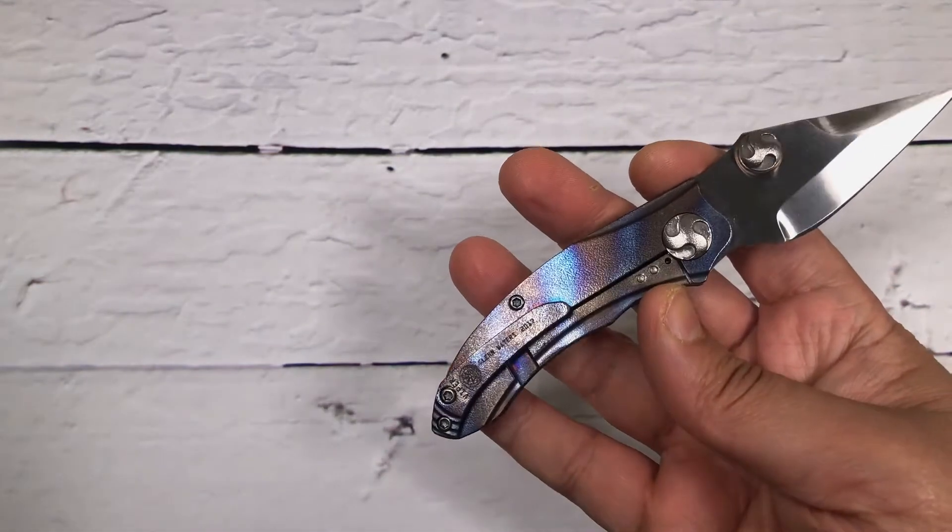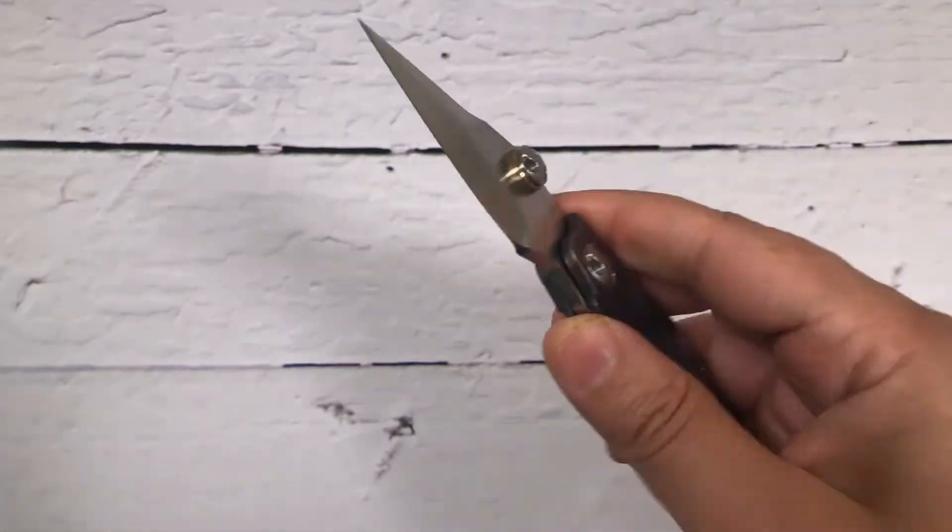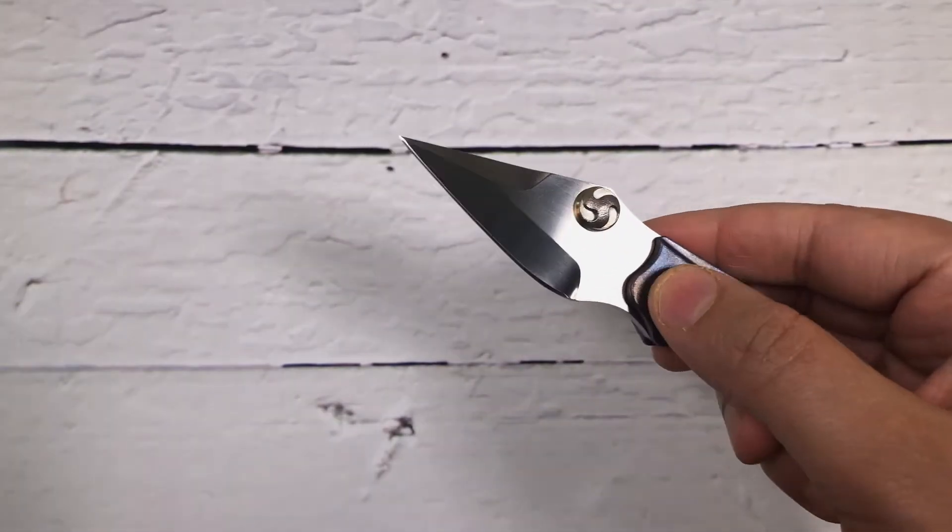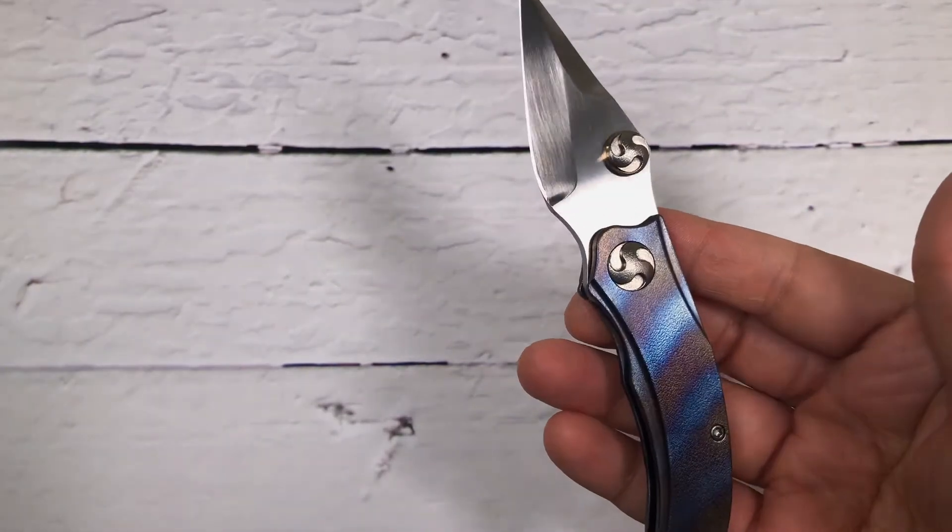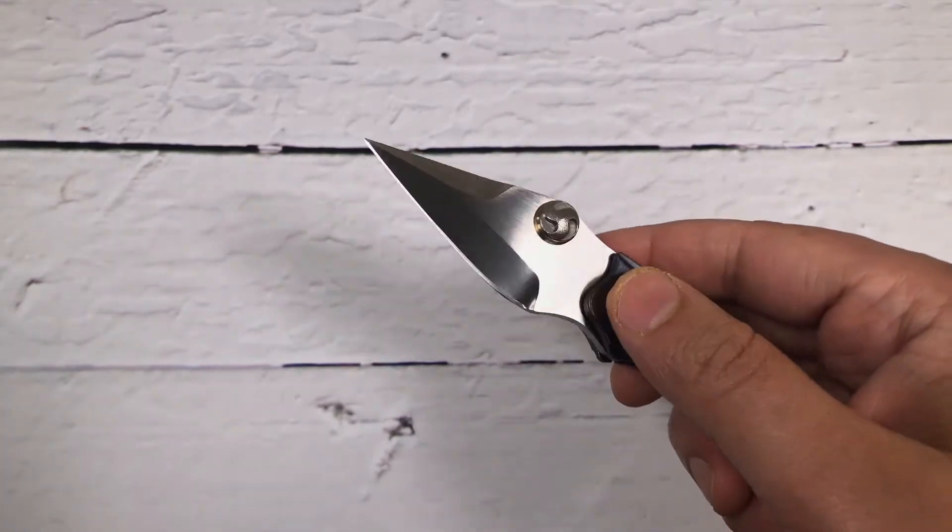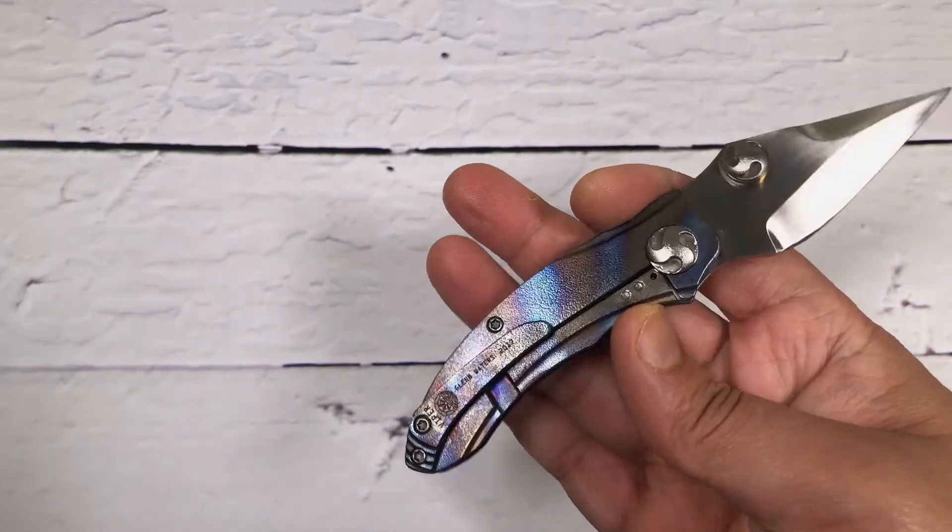Nice thumb stud. This pivot system is his signature pivot system. I love this pivot system and it comes with the tool to open it when you buy a custom knife from Glenn Waters.